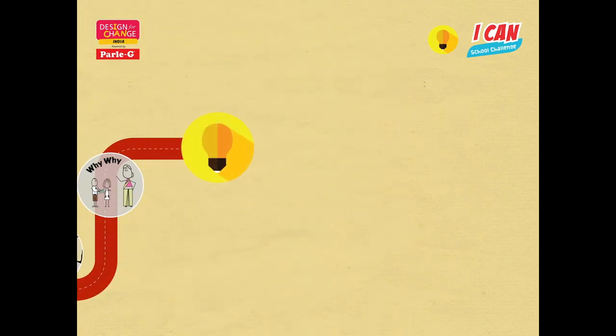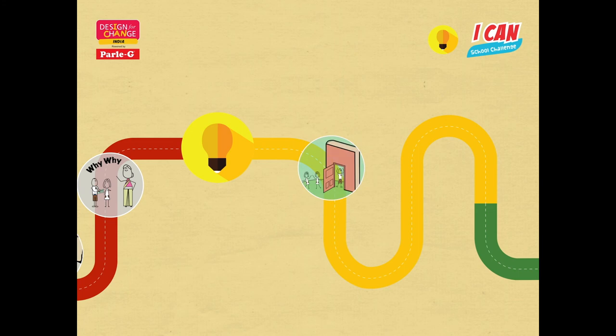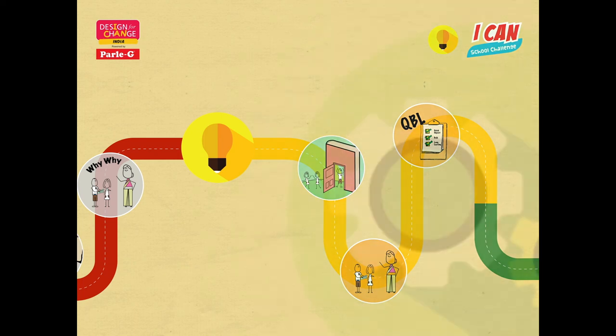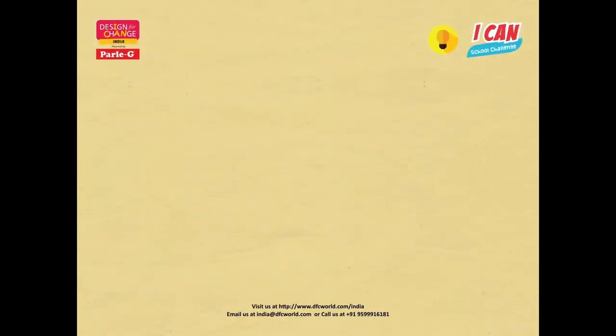Here is a quick recap of the second step — Imagine. Ensure a fun and effective brainstorming session. Remind children to reflect on the inputs of the users. Use the QBL principle to vote for ideas that best address the challenge. Your superheroes are now ready to move on to the next step, which is Do. All the best and happy brainstorming!